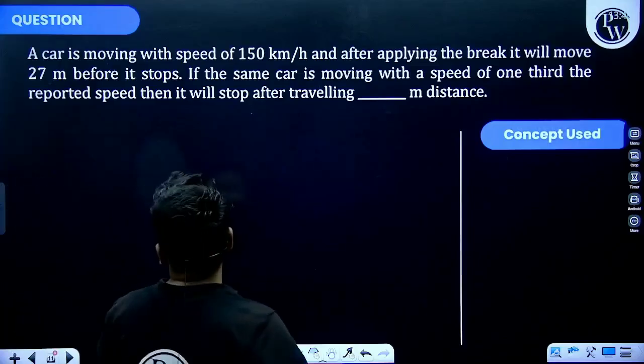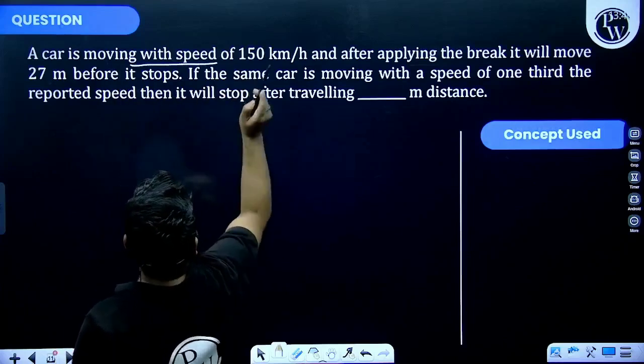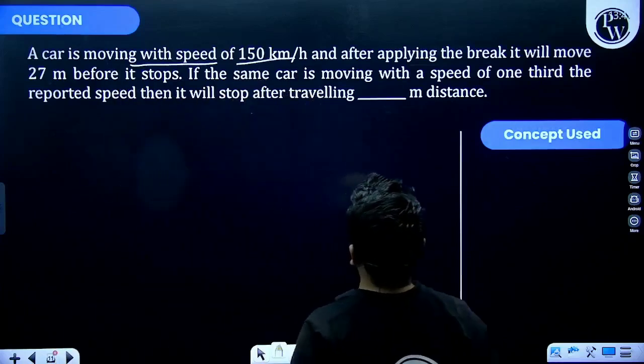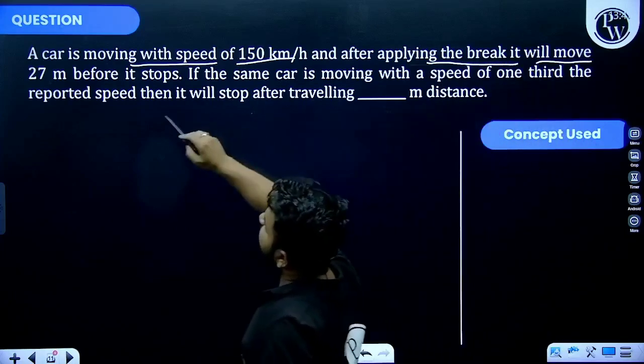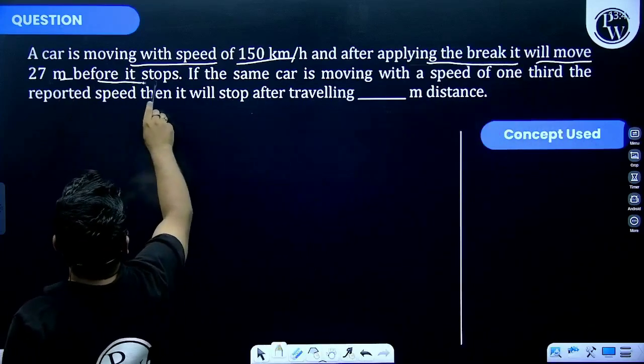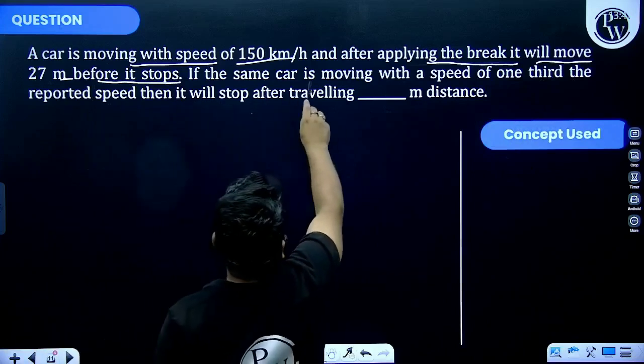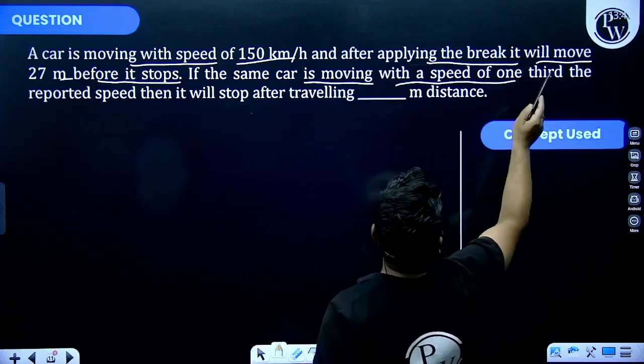Let's see this problem. A car is moving with a speed of 150 kilometer per hour and after applying the brake it will move 27 meter before it stops. If the same car is moving with a speed of one-third the reported speed, then it will stop after traveling how much meter?